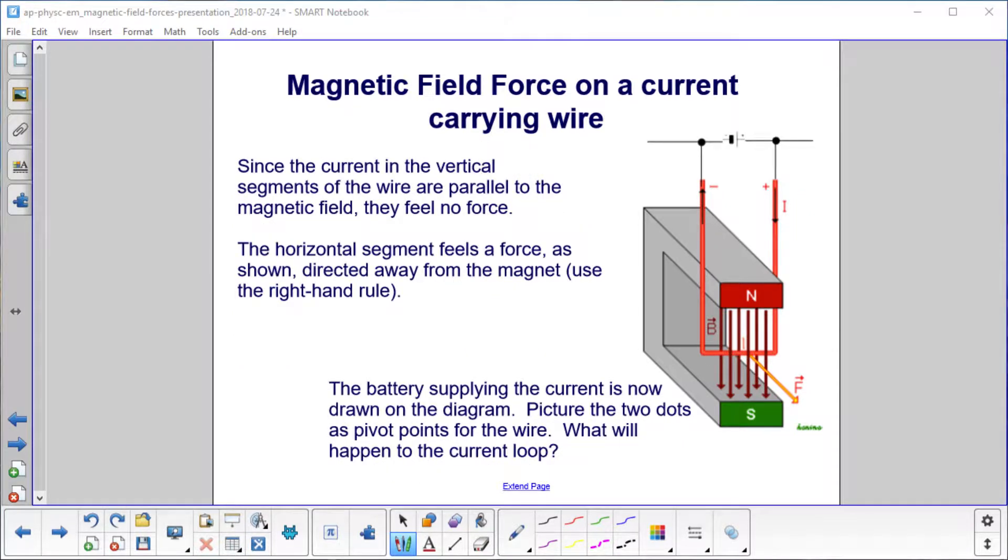The current in the vertical pieces flows down like this, then comes up here. That's parallel and anti-parallel to the magnetic field, so they feel no force. The horizontal segment feels a force directed away from the magnet. Using the right-hand rule: put your four fingers in the direction of the current, face your palm down in the direction of the magnetic field, curl your fingers, extend your thumb - it points out.